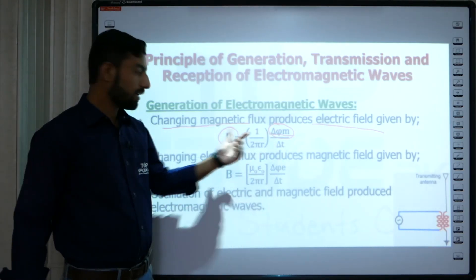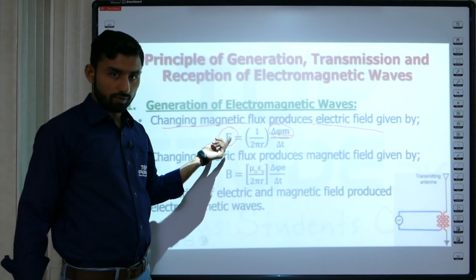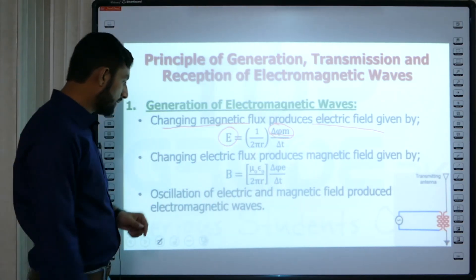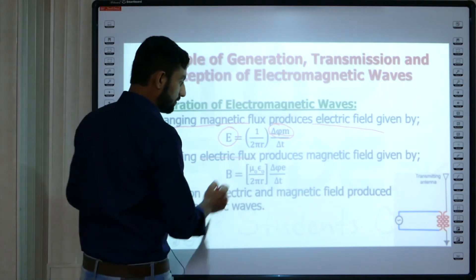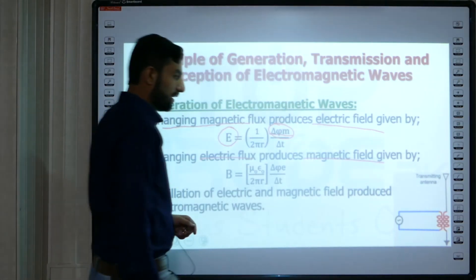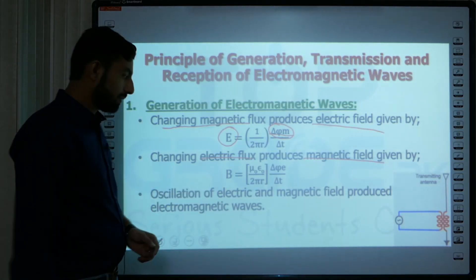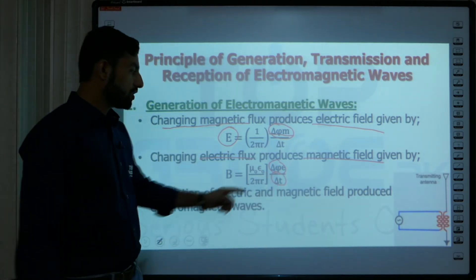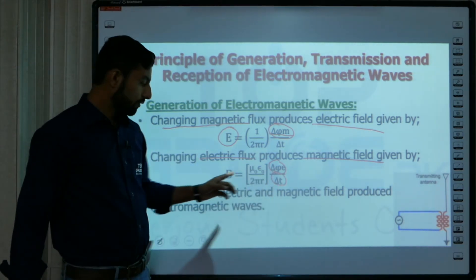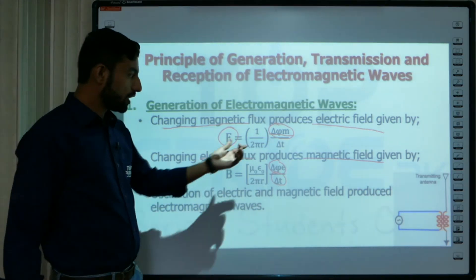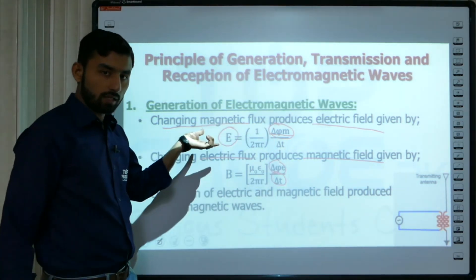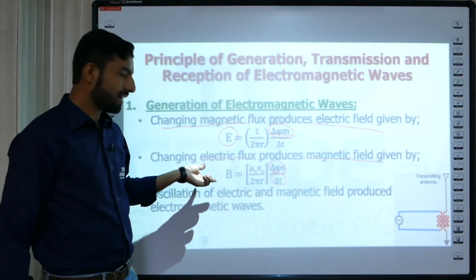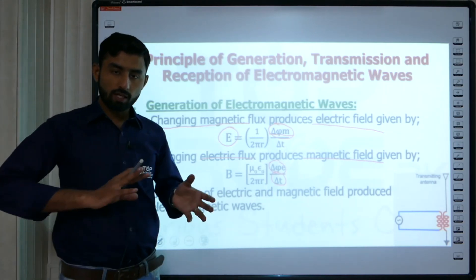So a changing magnetic field produces an electric field. In the same manner, a changing electric flux will produce a change in the magnetic field. That process is governed by the equation: delta flux-e divided by delta t. A change in electric flux produces a magnetic field. So changing magnetic field produces electric field, and changing electric field produces changing magnetic field.